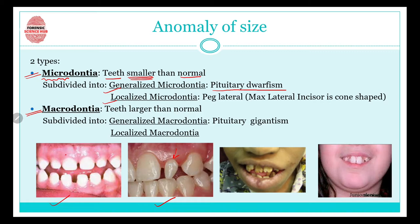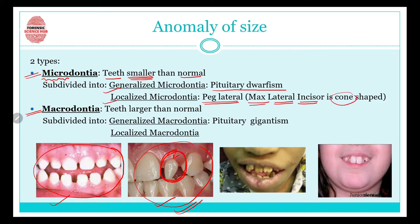Localized microdontia means only certain teeth are smaller in size. An example of localized microdontia is peg lateral teeth, where the maxillary lateral incisor becomes cone-shaped. The central incisor is normal but the lateral incisor becomes cone-shaped — this is called peg lateral, and it is an example of localized microdontia.